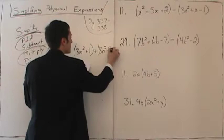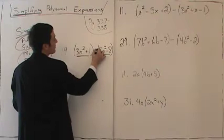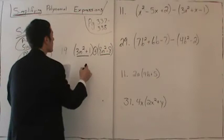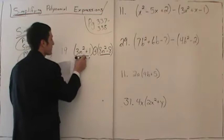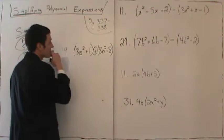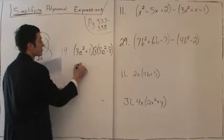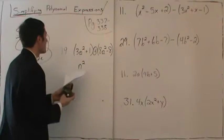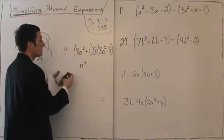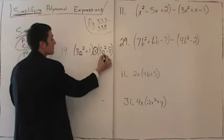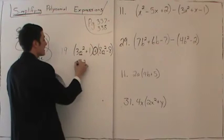We have a binomial and a binomial with addition separating the two — so this is addition, not multiplication. When you add, something must match and what matches doesn't change. Look at the n squared term — does n squared match any other term? Yes. So write your n squared; it will not change. Students make the mistake of writing n to the fourth — no, we are not adding exponents here when adding polynomials. Add what's in front: 3 plus 8 gives 11n squared. Cross those out.